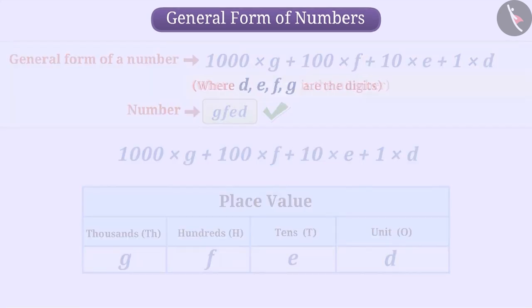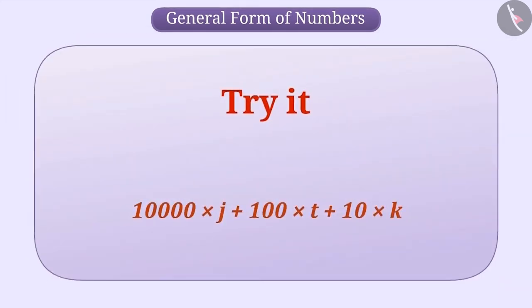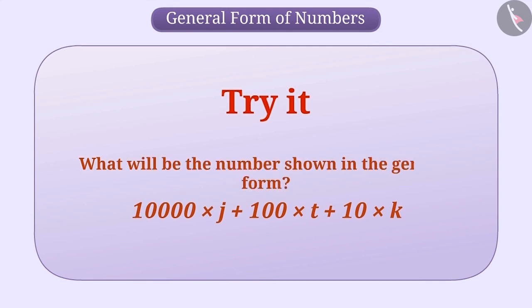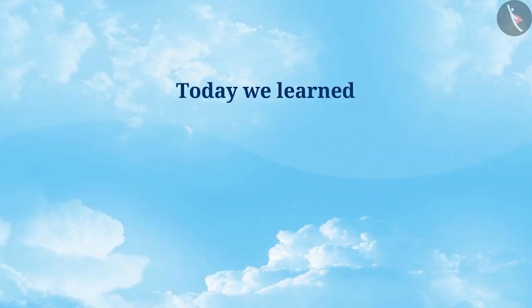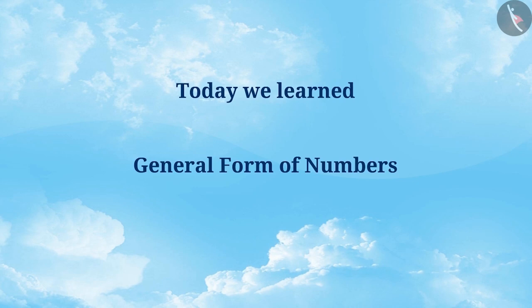Now you find out what will be the number shown in the general form: 10,000 × J + 100 × T + 10 × K. So today, we learned the general form of numbers. In the next video, we will see some examples related to it.